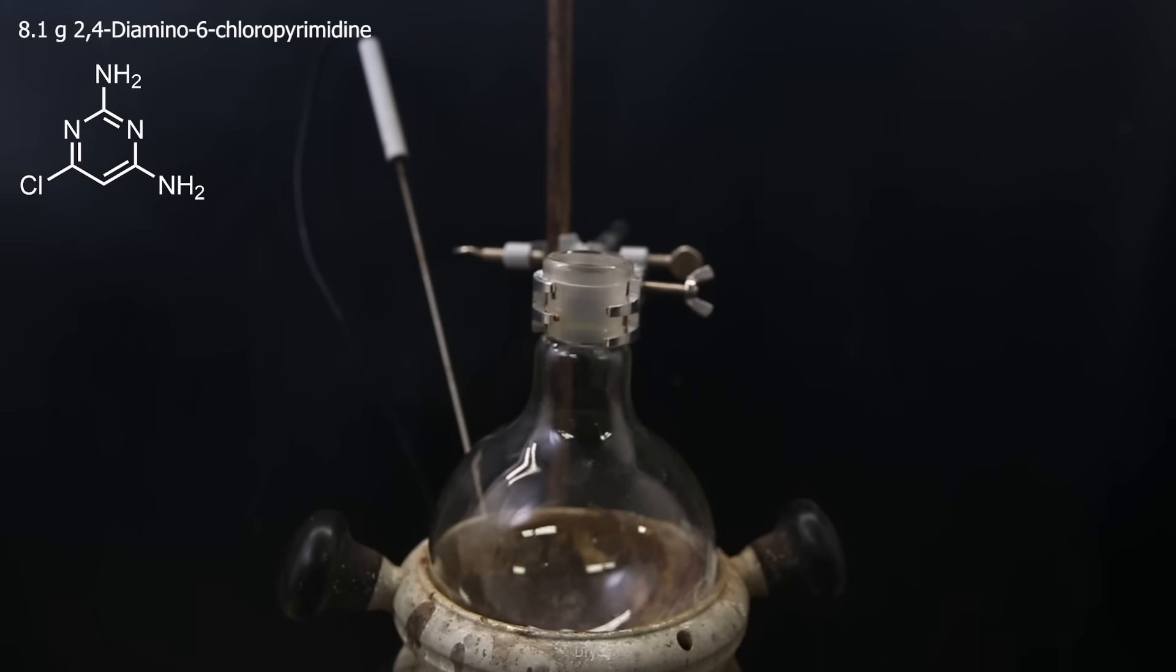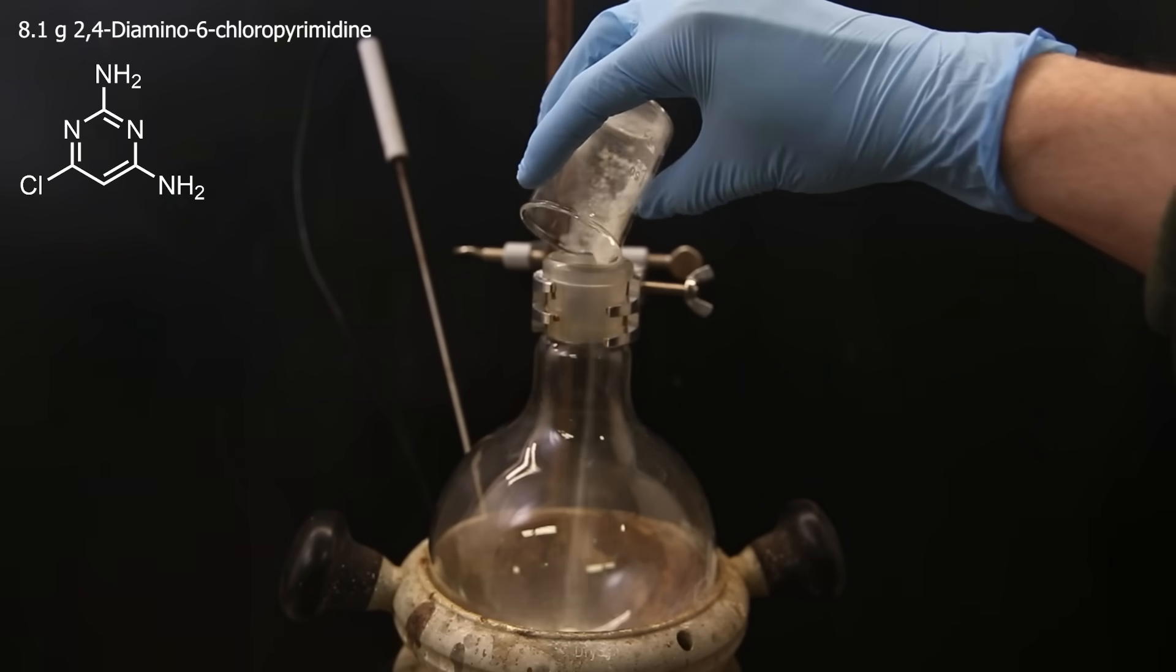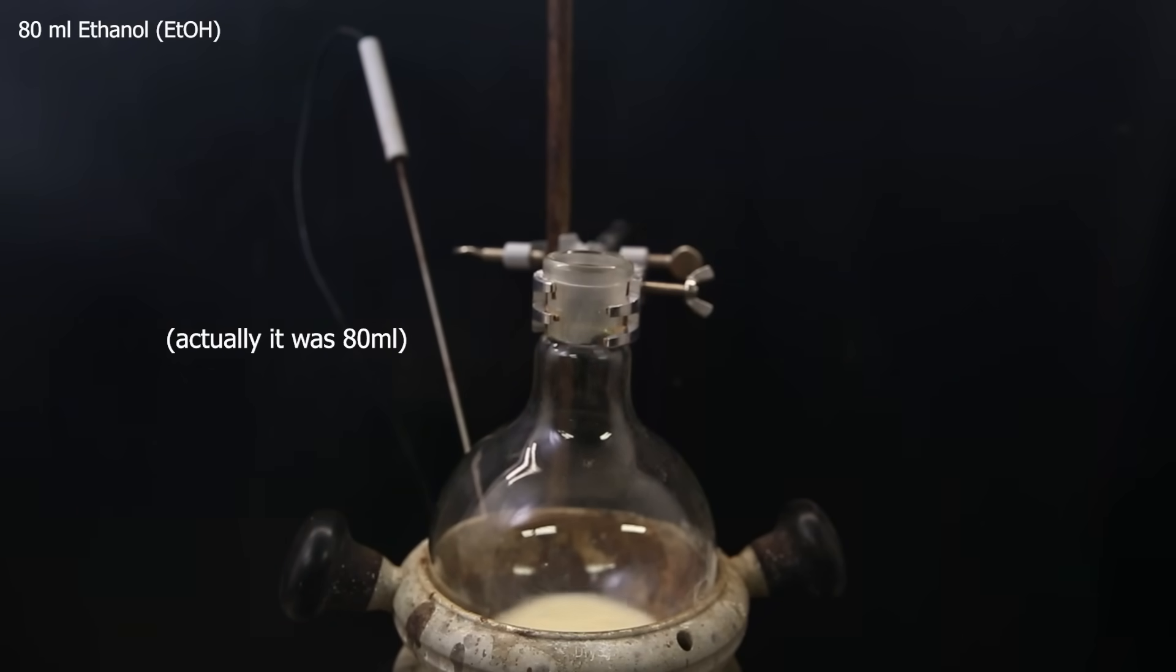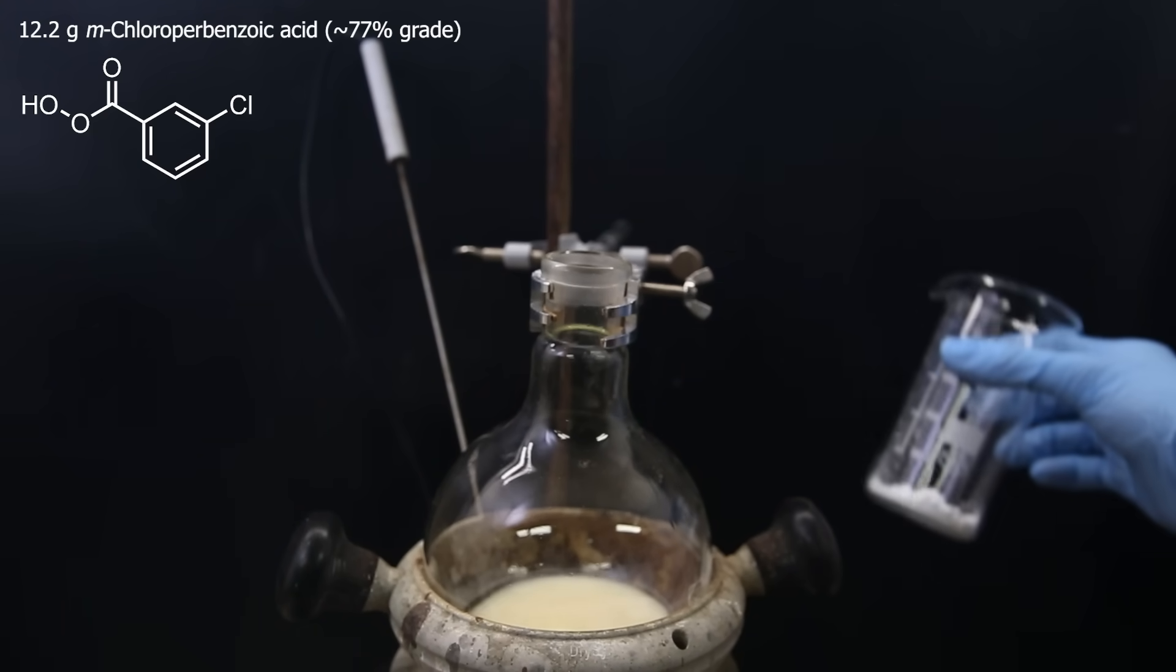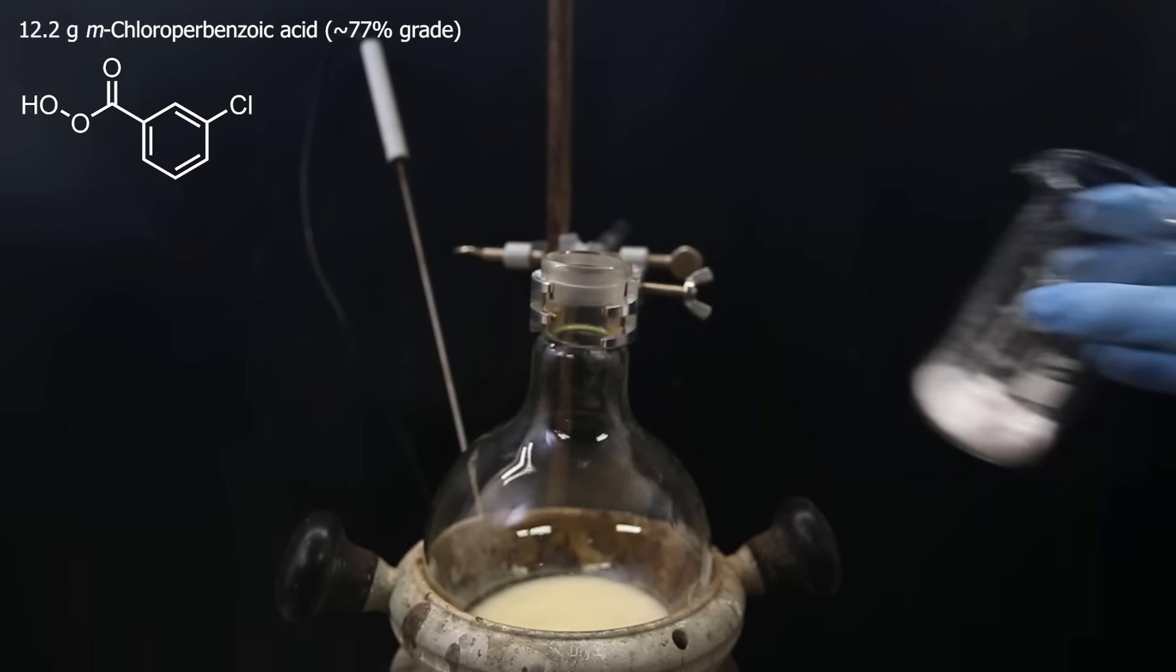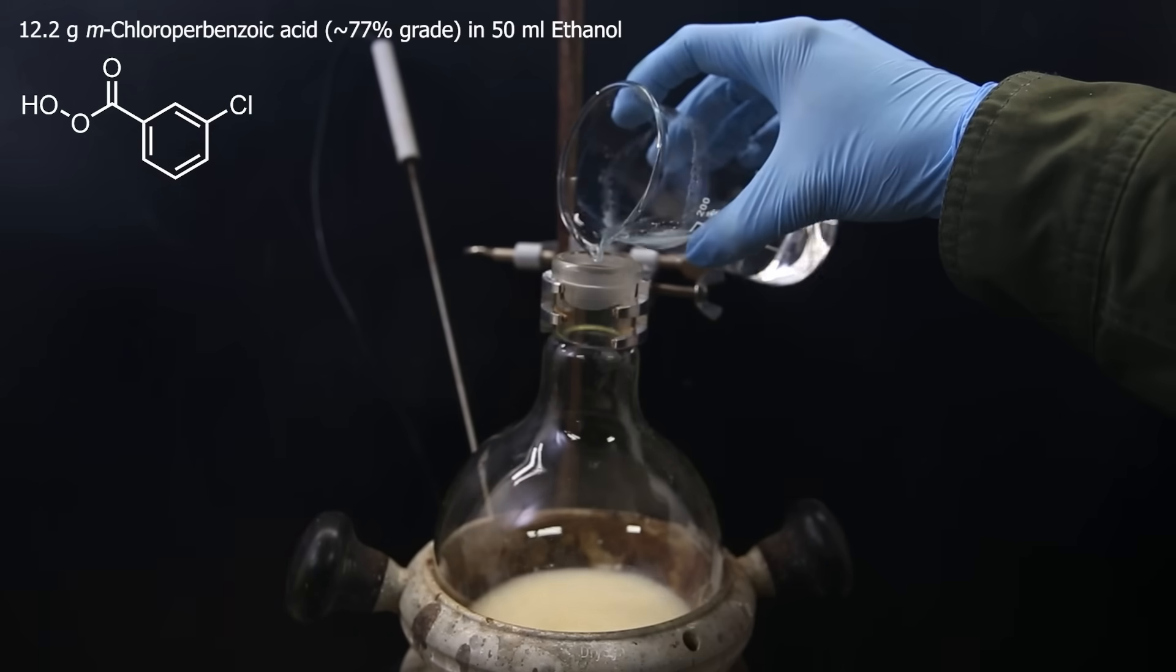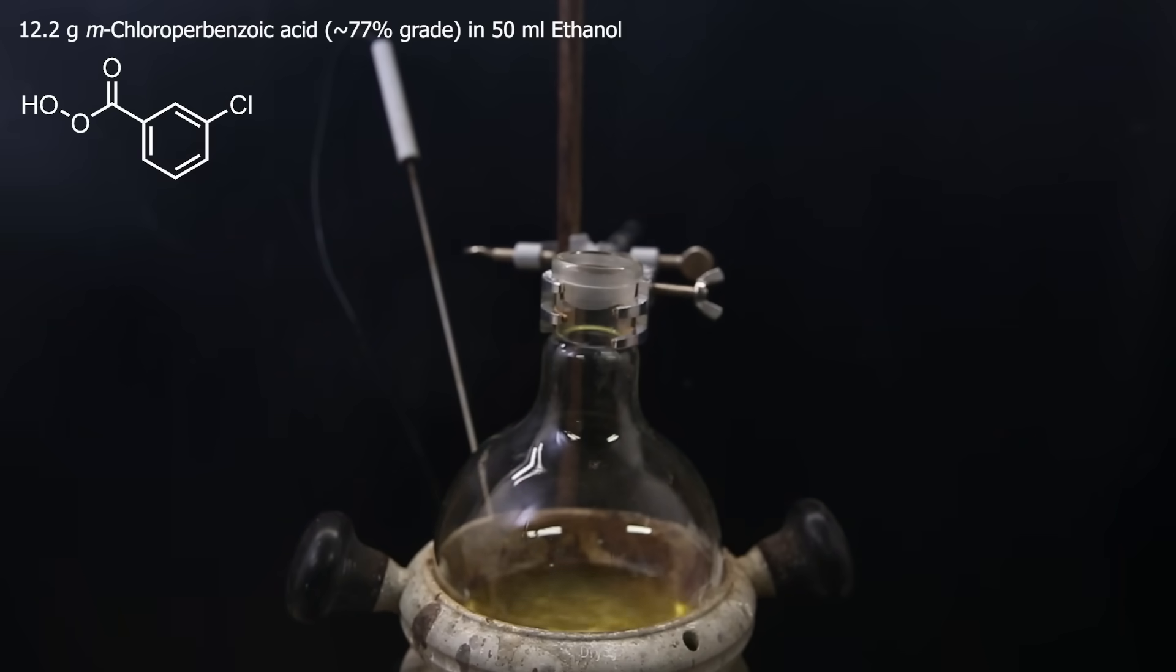Now moving on to the next step. I add half of the chloropyrimidine product to a large flask and I mix it with 60 ml of ethanol as a solvent. I then weighed out 12.2 grams of M-chloroperoxybenzoic acid and I dissolve it all in 50 ml of ethanol. I add it slowly to the solution in the flask and it gradually turns transparent, and then let it stir at room temperature for an hour.